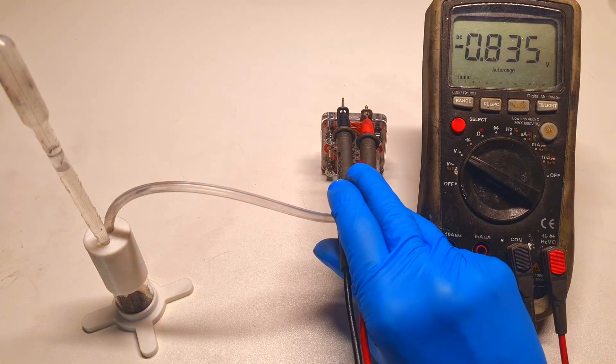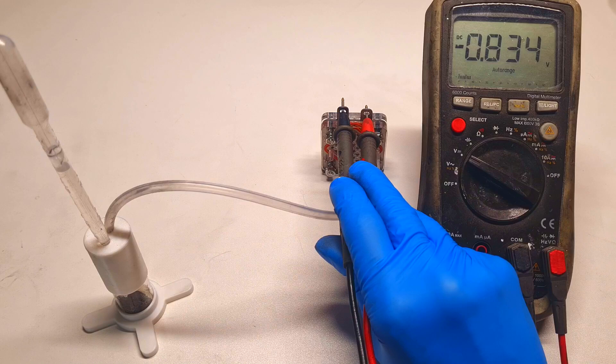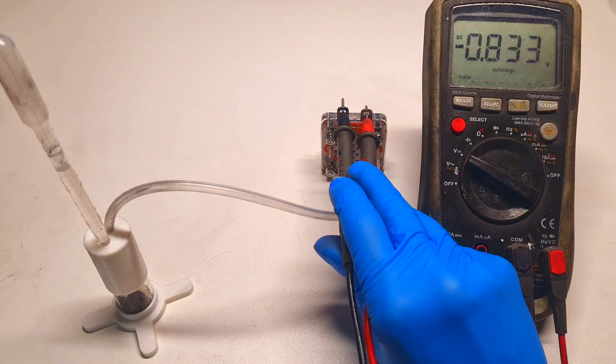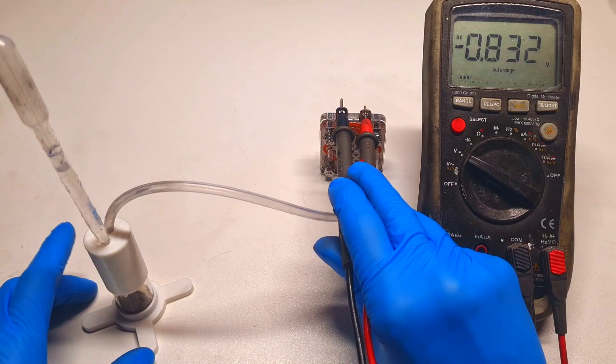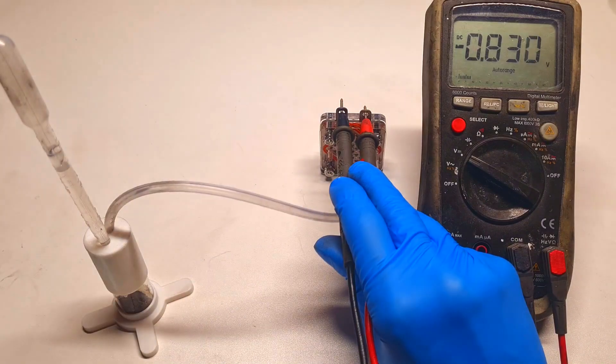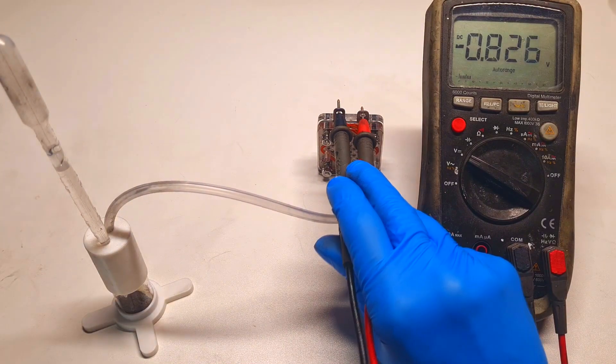The voltage is correct, 0.8 to 0.9 volts. This is the cell voltage of this hydrogen fuel cell without any load.